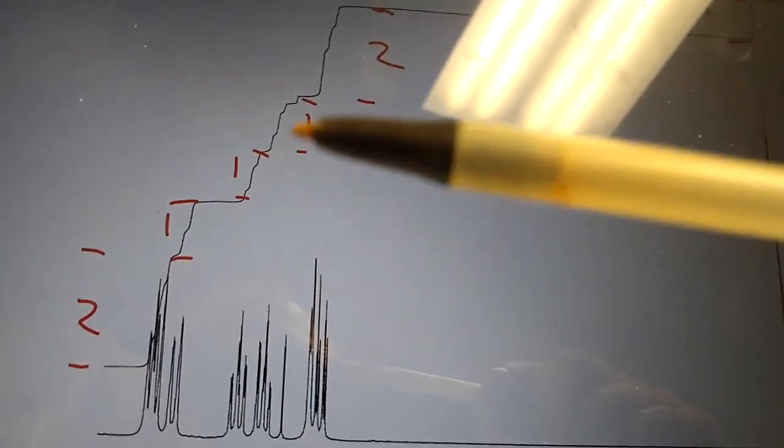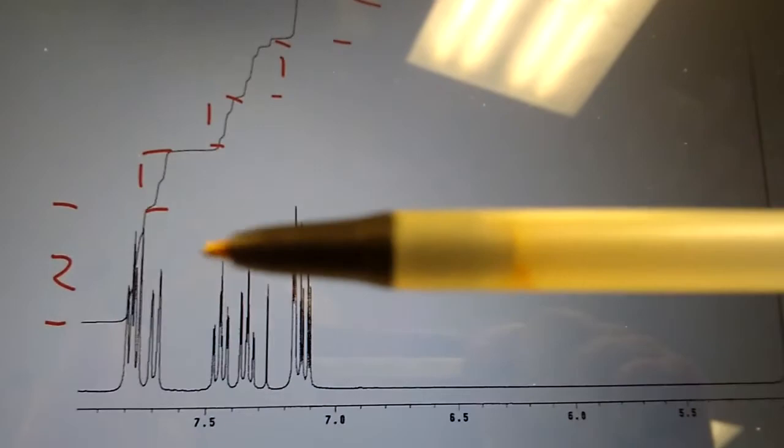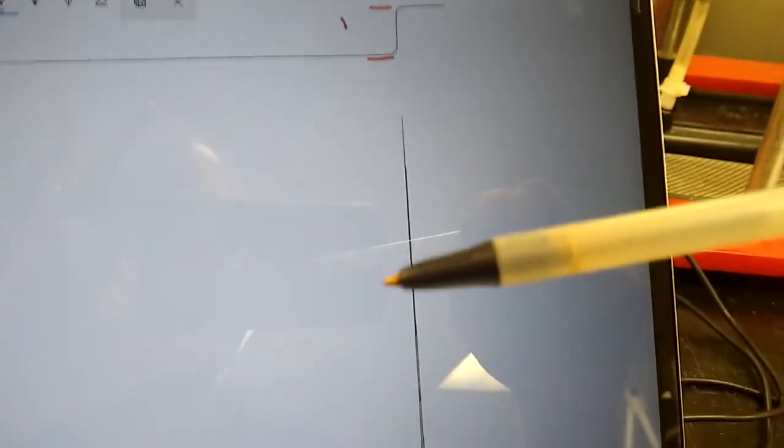If you add these up in the aromatic region, we have two, three, four, five, seven aromatic protons for all of this section here. And then over here you have one, and this is for the OH, the alcohol proton.